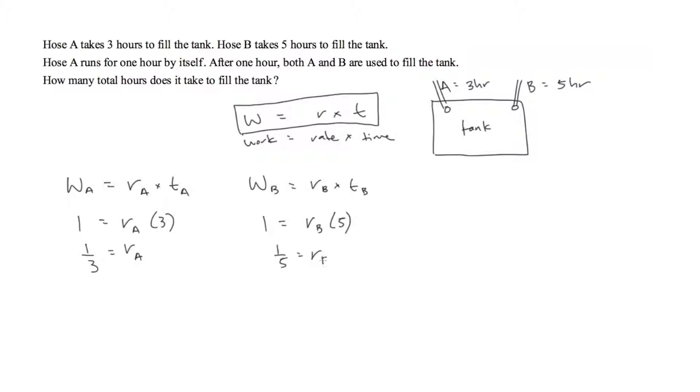Now it's saying that Hose A runs for 1 hour by itself. So we need to figure out the work that it does in 1 hour. We're just going to use this W equals RT equation again. The work that it does at the rate that it's working, which is 1 third, running for 1 total hour, it basically does 1 third of the work.